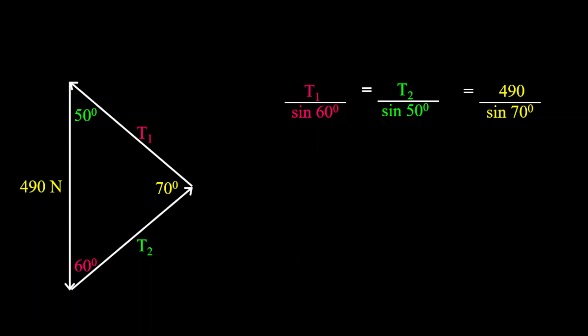So from this, we can find our T1 and T2 quite easily. And so therefore, T1 equals to 490 multiplied by sine 60 degrees divided by sine 70 degrees. So therefore, T1 equals to 451.59 newtons.